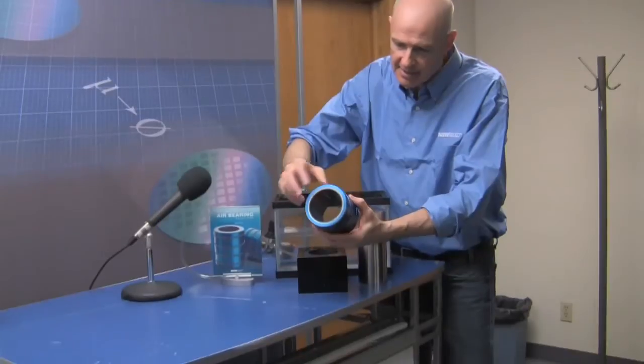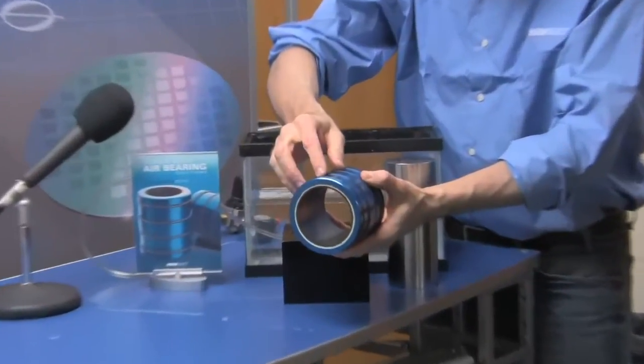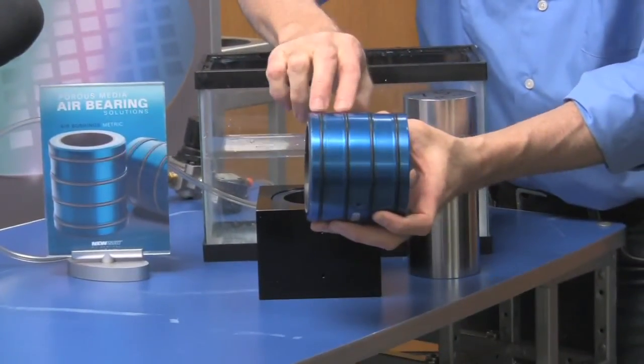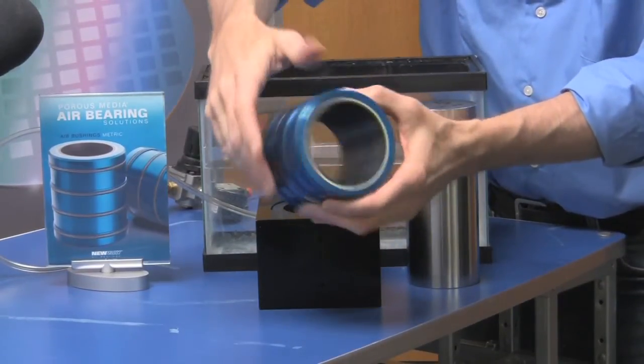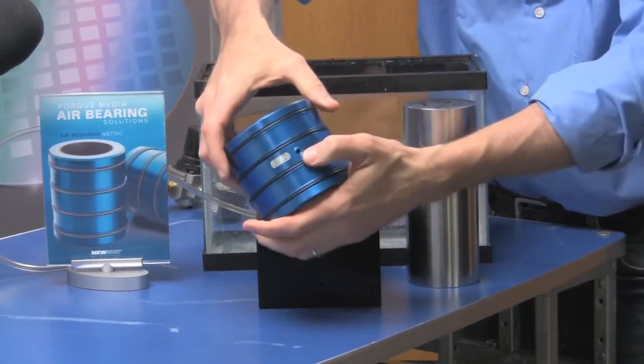So you can see this is blue, so you know it's a 75 millimeter metric housing. It comes with O-rings on the OD for mounting. It's got a very precise bore in it. You've got a serial number and an air input.